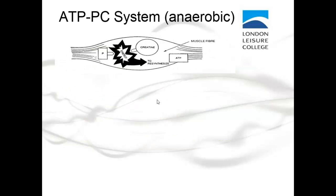Within a muscle, the ATP-PC system uses creatine found in the muscle, which is added to ADP to resynthesize adenosine triphosphate. So creatine stored in the muscle is what's used in the first energy system to create ATP.